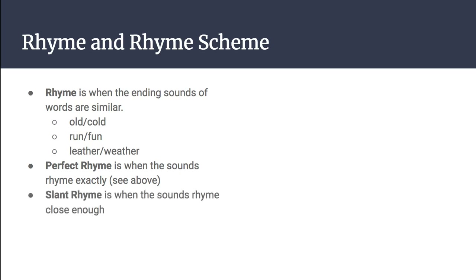Slant rhyme is when the rhyme sounds close enough. A lot of poems written 300 years ago used to rhyme when spoken in their original accent and do not rhyme anymore. So a lot of the poems that we read now have slant rhyme. Other examples might be eyes and light — they kind of sort of rhyme. Worm and swarm sort of rhyme. Or fate and save — they have the same A sound, but the T and the V are a little bit different.